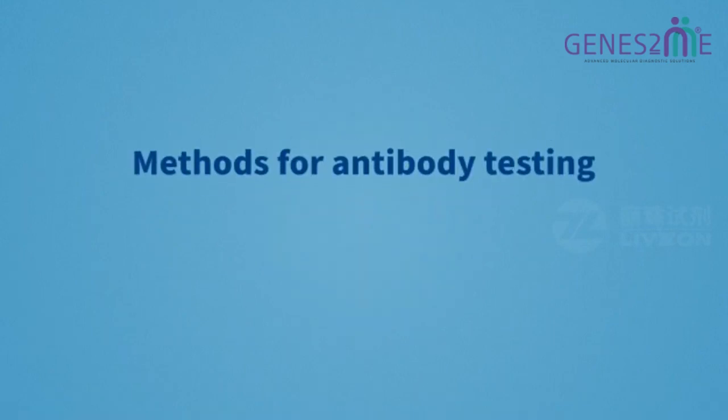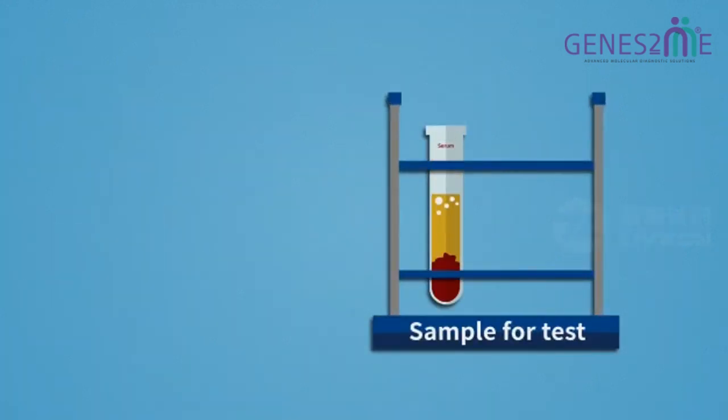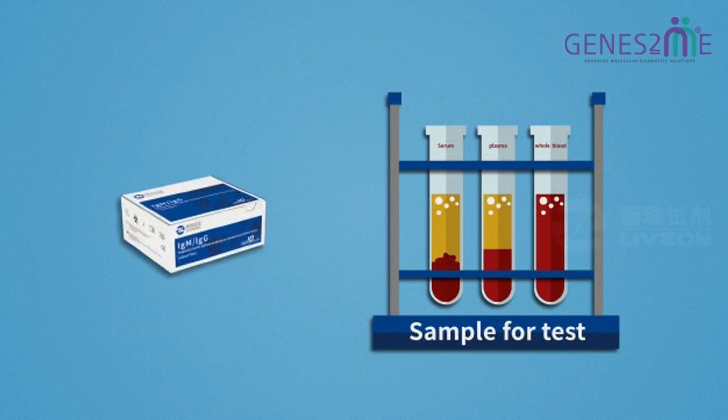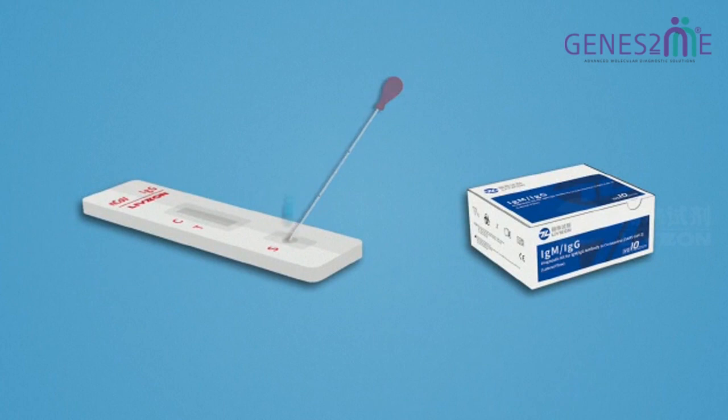Lateral flow immunoassay is the most simple, rapid, and easy-to-use method for antibody testing. Serum, plasma, or whole blood can be used as a sample for LiveZone's test kit. Simple test procedure is adding sample and diluent. Result can be visually viewed after 15 minutes.